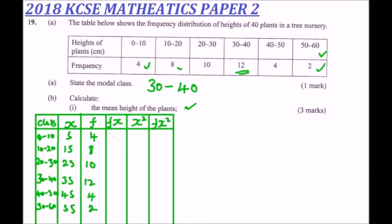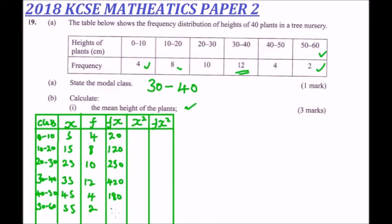Now we calculate FX by multiplying frequency by midpoint for each class: 5×4 = 20, 15×8 = 120, 25×10 = 250, 35×12 = 420, 45×4 = 180, and 55×2 = 110.